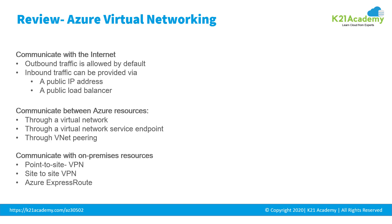Azure resources communicate securely with each other in one of the following ways. First, through a virtual network — you can deploy VMs and other Azure resources such as Azure App Service Environments, Azure Kubernetes Service (AKS), and Virtual Machine Scale Sets (VMSS). Second, via a virtual network service endpoint — you can extend your virtual network's private address space and identity to Azure service resources such as storage accounts and SQL databases. Service endpoints allow you to secure your critical Azure services to a virtual network.